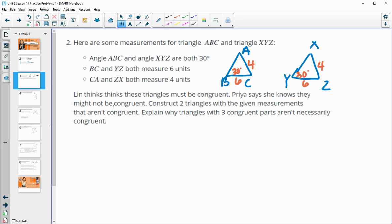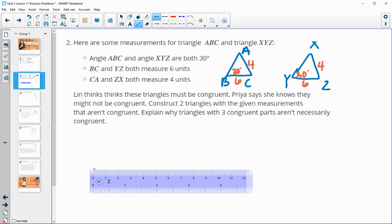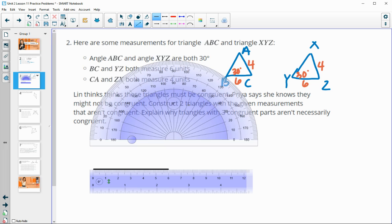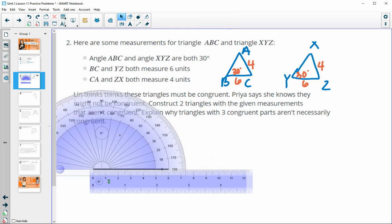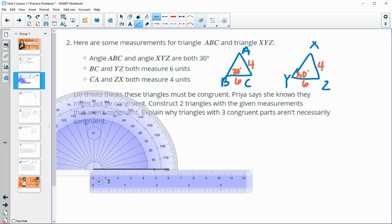So Lynn thinks these triangles must be congruent. And Priya says she knows they might not be congruent. Construct two triangles with the given measurements that aren't congruent and explain why triangles with three congruent parts aren't necessarily congruent. So let's go ahead and construct these, a couple different triangles. And so I'll go with maybe centimeters here. So I'm going to make this first one, I'm going to put the 6 here. And then we'll do the 30 degree angle was attached to that 6.